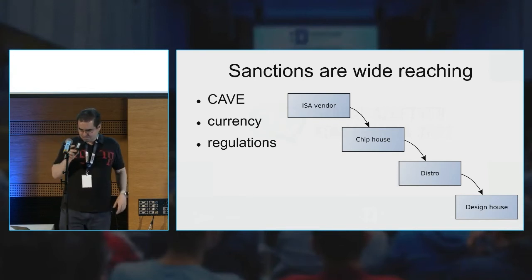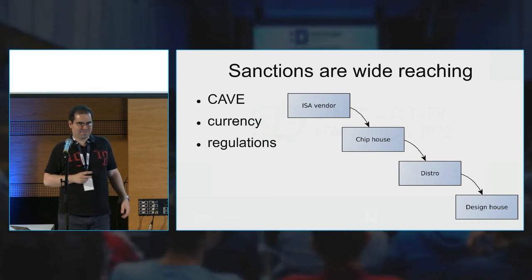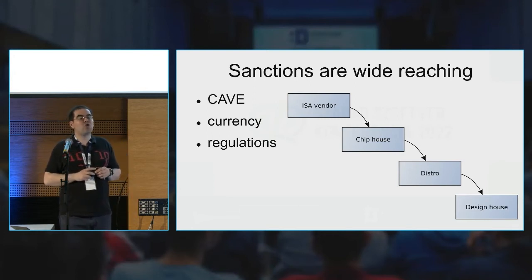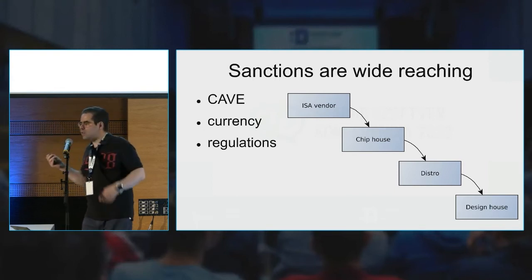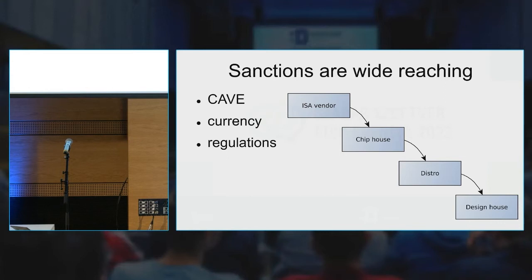Before we go into the actual application, who of you ever worked in a sanction-critical environment? This is about American sanctions. Russian, North Korean, and Persian sanctions work a bit differently. In the American sanction system, we have a value chain and the American government looks at the whole value chain — from the chip at the top down to you at the bottom — and can target any one of these four steps.